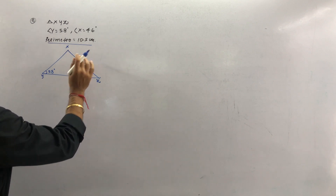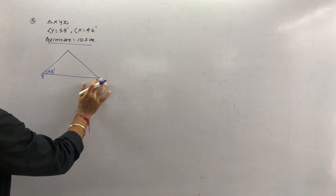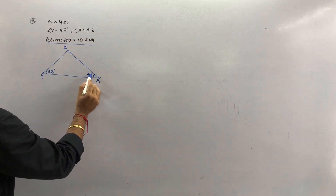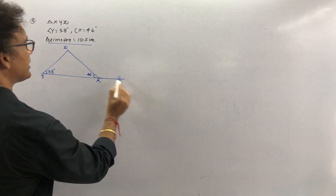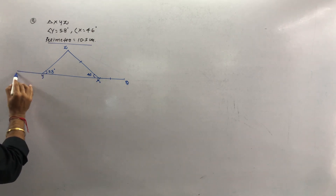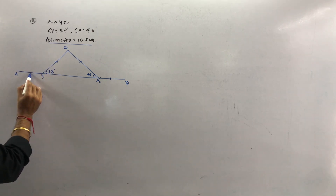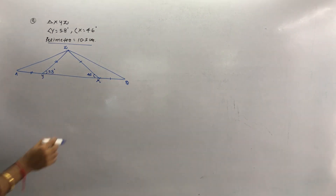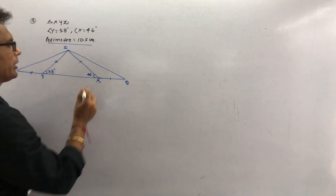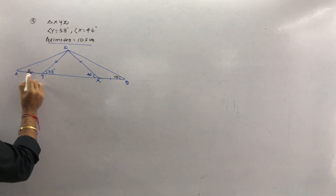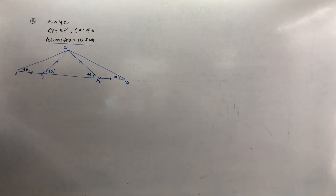Make it as X, Y, and Z. Angle Z is 46° — its half will be 23°. Angle Y is 58° — its half will be 29°. We will extend the sides and label the construction points as A and B. First draw line AB of 10.5 cm, then mark angle 29° from one end and angle 23° from the other end.